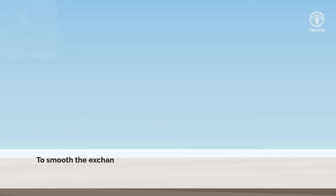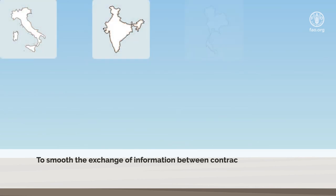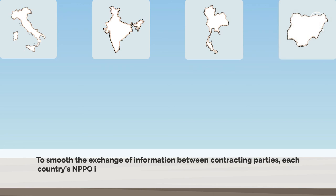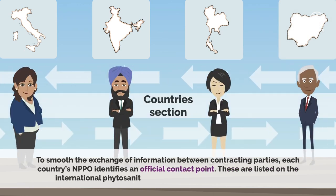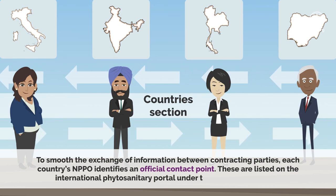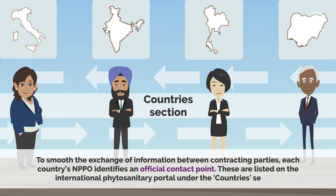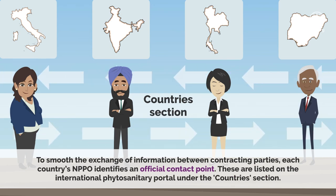To smooth the exchange of information between contracting parties, each country's national plant protection organization identifies an official contact point. These are listed on the International Phytosanitary Portal under the countries section.